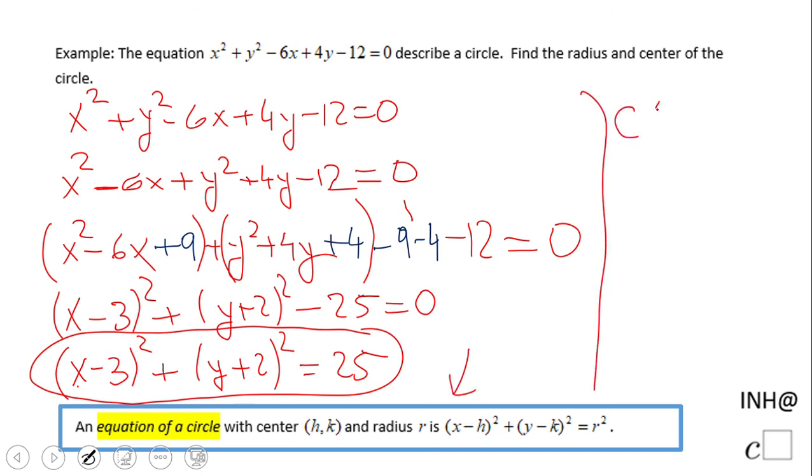The center will be the opposite of what's here. We have x minus 3 here, so 3 will be the x coordinate.